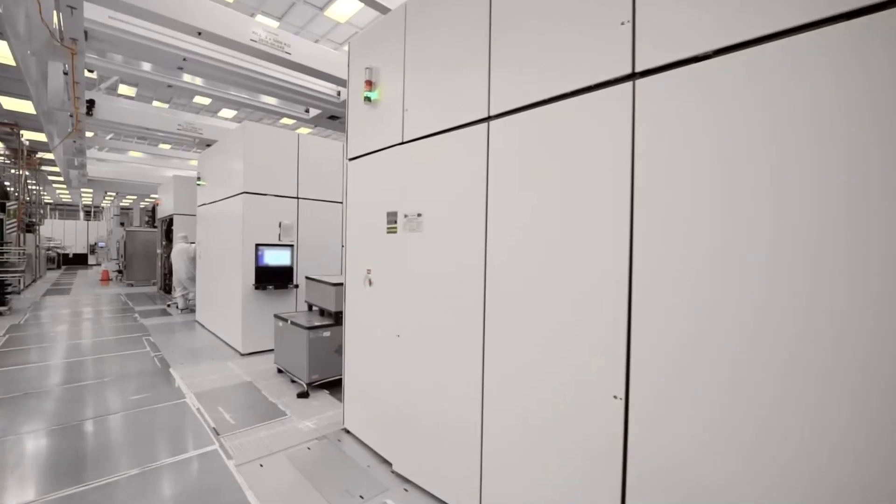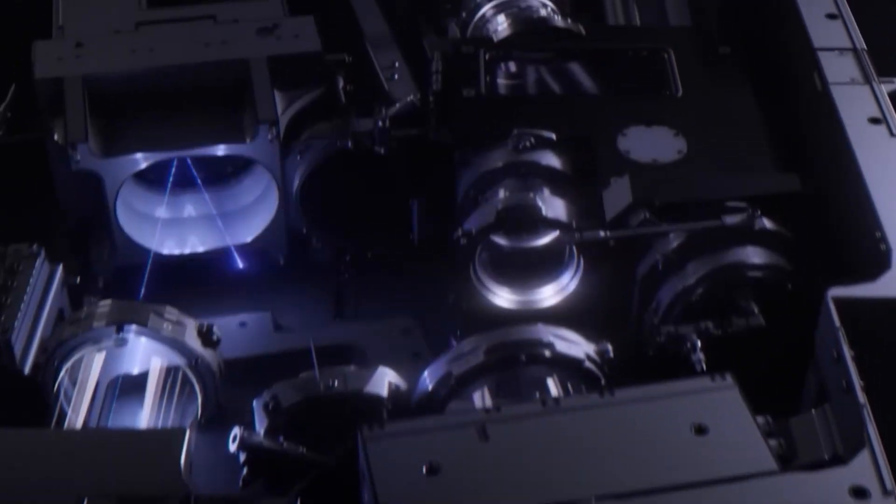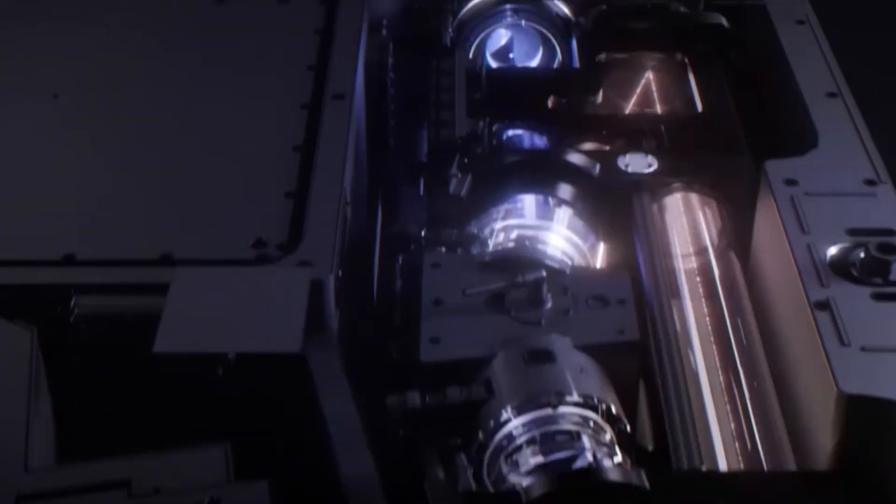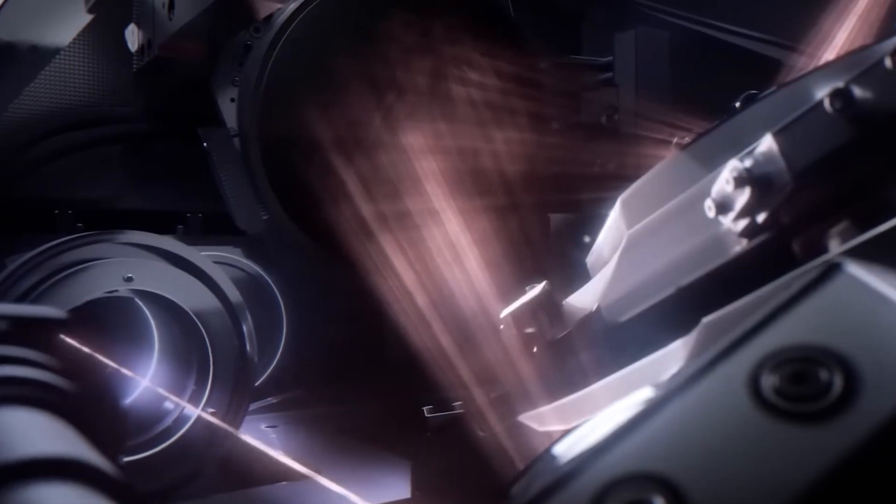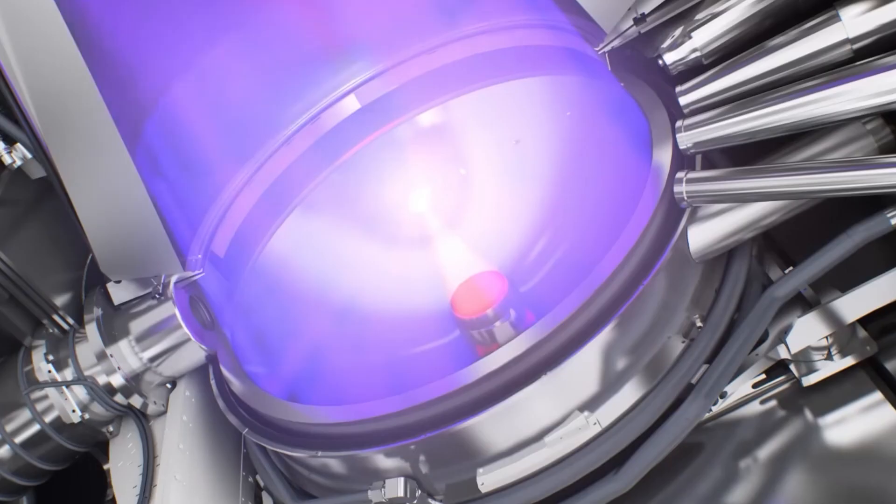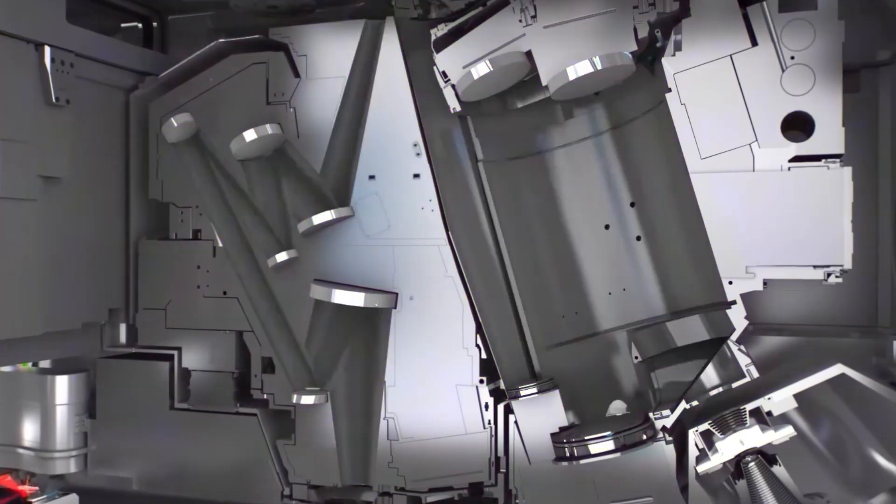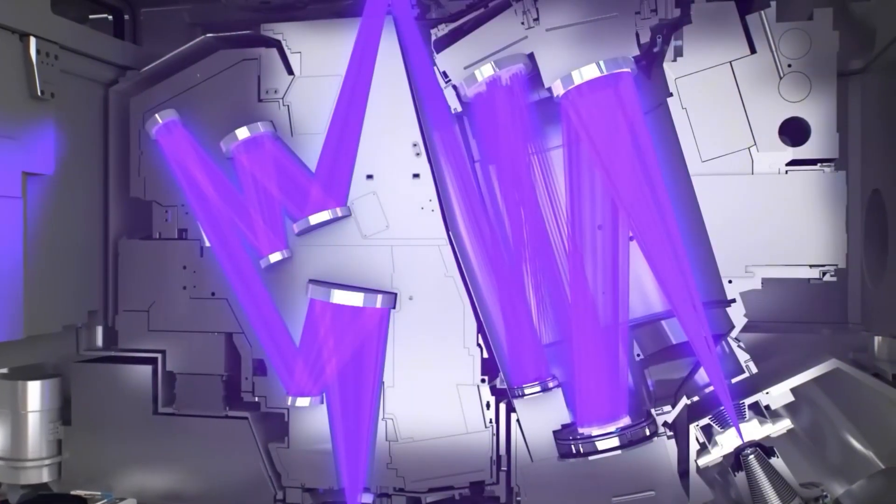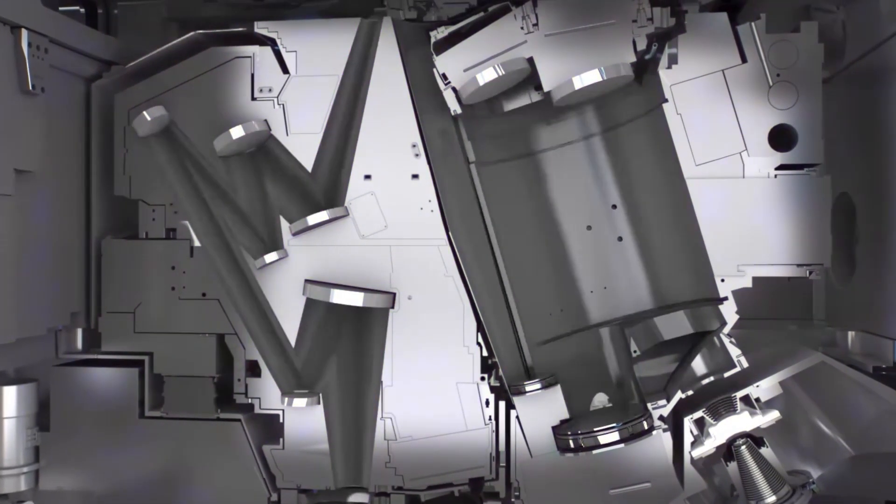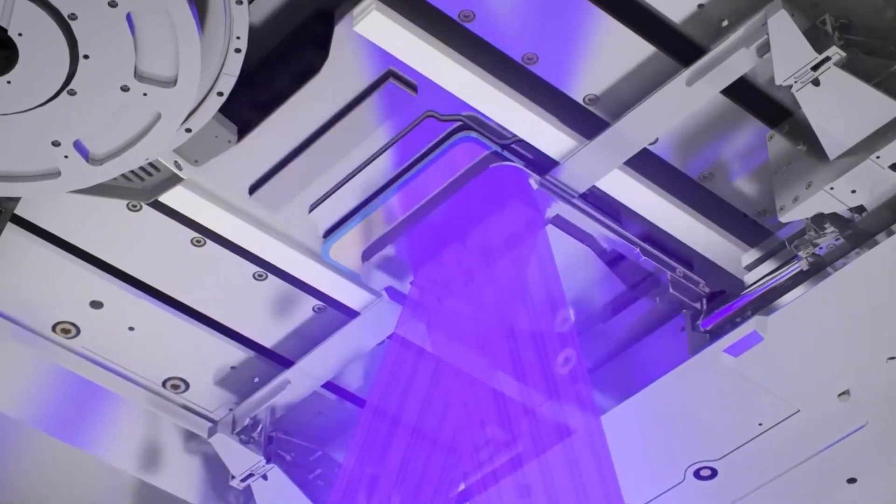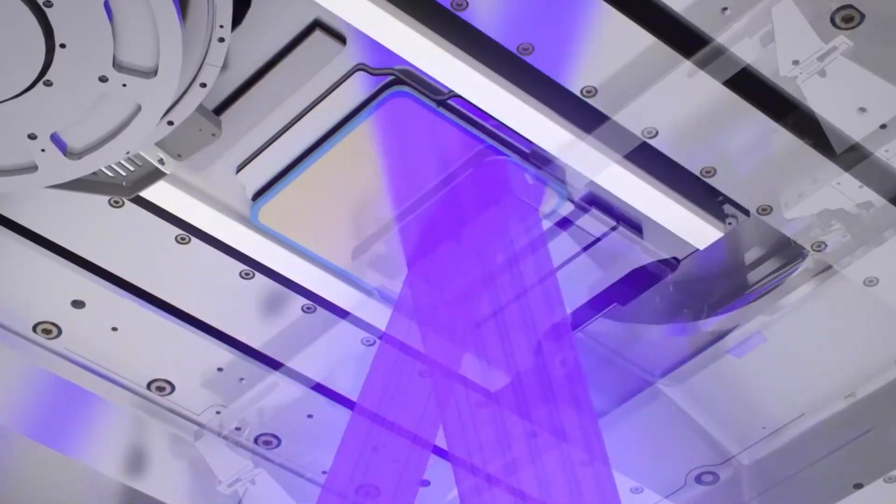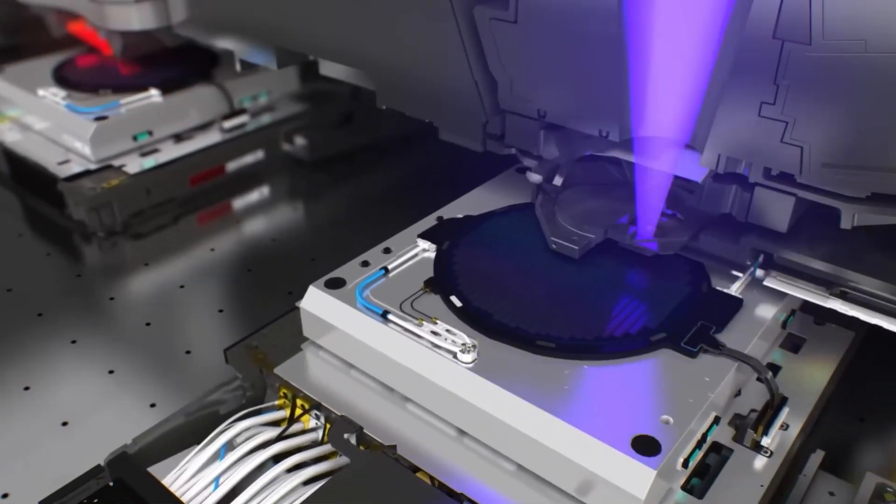These mirrors are polished to perfection, with deviations no larger than a single atom, ensuring every photon of light is directed with pinpoint accuracy. Each wafer undergoes multiple rounds of lithography, adding new intricate layers with every pass through the machine. By the end of this process, the wafers contain up to 100 layers, each stacked with nanometer level precision.